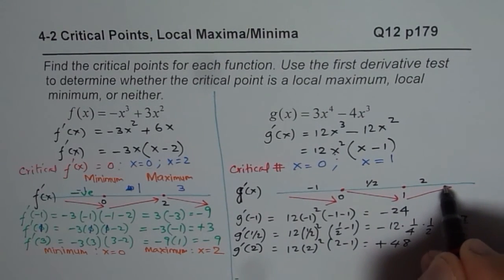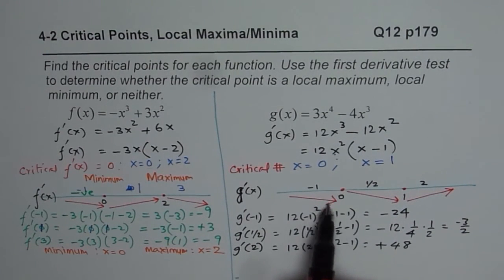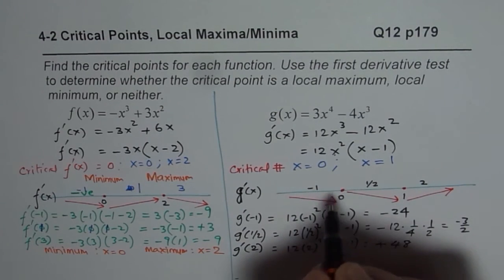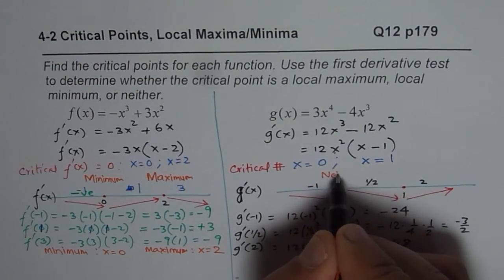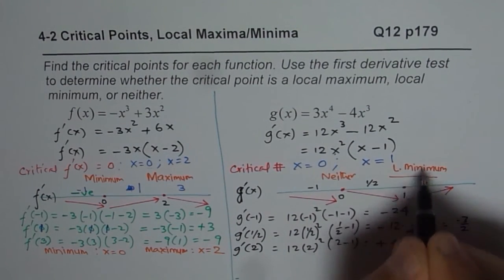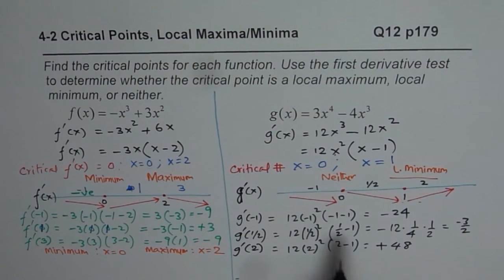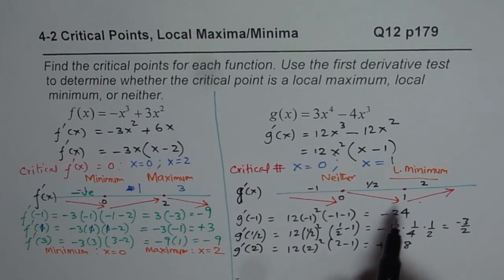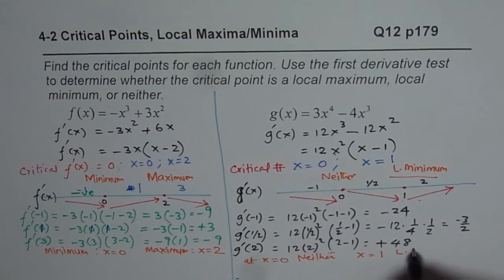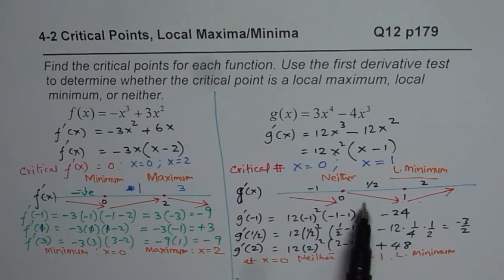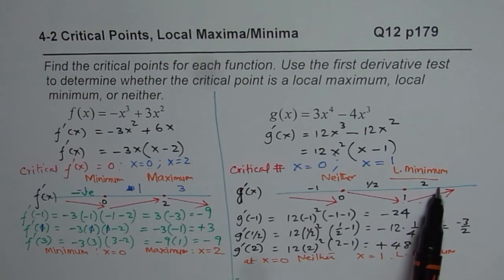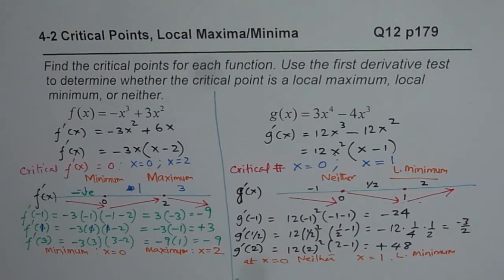At the first critical point x equals 0, the function is neither a local maximum nor a local minimum, since the derivative is negative on both sides — the function is decreasing on both sides. At x equals 1, we have a local minimum, because the derivative changes from negative to positive, meaning the function goes from decreasing to increasing. I hope that helps. Thank you.